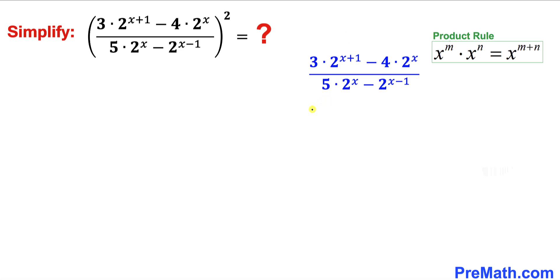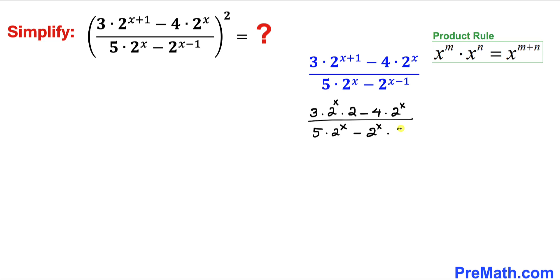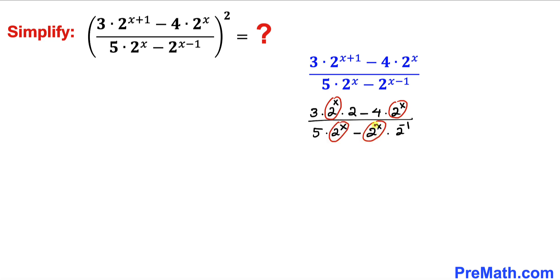Therefore we can write the expression as: 3 times 2 power x times 2 power 1, minus 4 times 2 power x, all over 5 times 2 power x minus 2 power x times 2 power negative 1. Now we can see that 2 power x is in common in the numerator, and likewise 2 power x is common in the denominator as well.